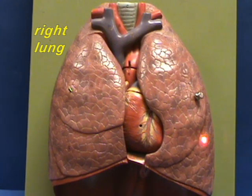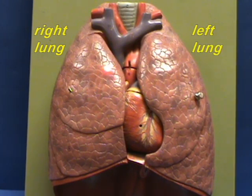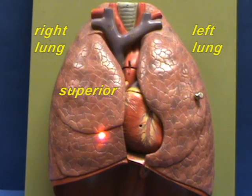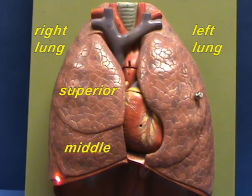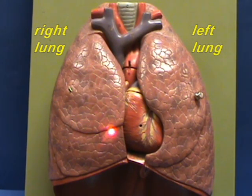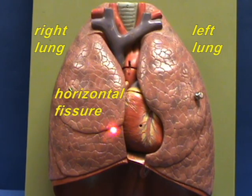Here is the left lung. Notice that the right lung is divided into three lobes: a superior lobe, a middle lobe, and an inferior lobe. The superior lobe is separated from the middle lobe by a deep fissure, which you can see right over here — this is the horizontal fissure.